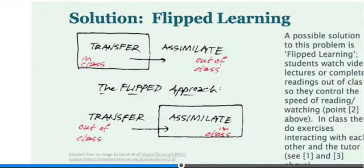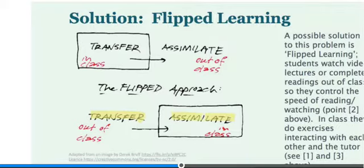The solution to the passivity problem is Flip Learning. In normal learning, you have theory in class and you practice out of class with a problem sheet. In the flipped approach, you transfer out of class — you cover the theory out of class — and you assimilate, meaning you practice, in class.